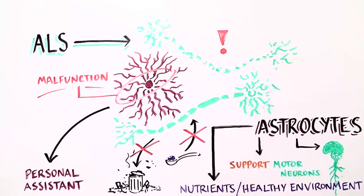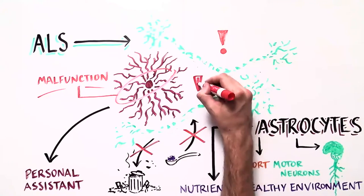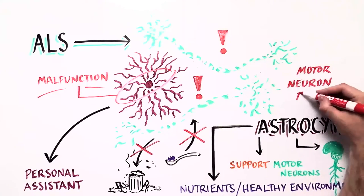In the case of ALS, astrocytes can malfunction, which causes the motor neurons to degenerate and eventually die.